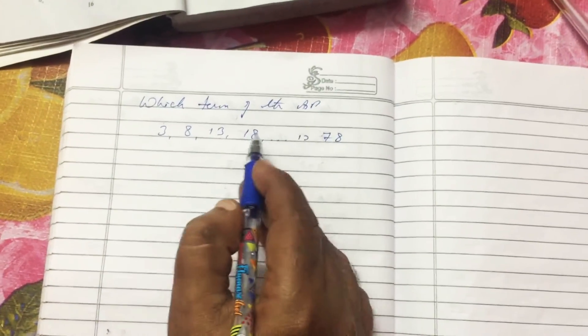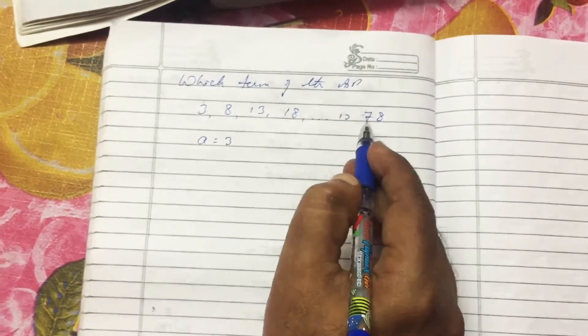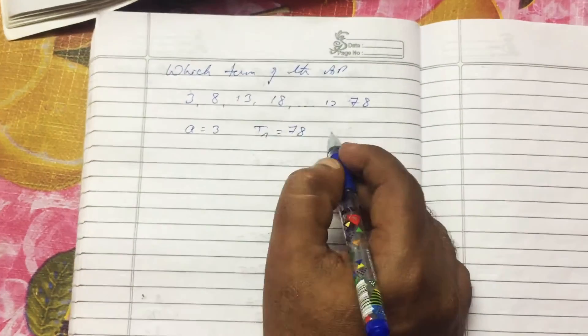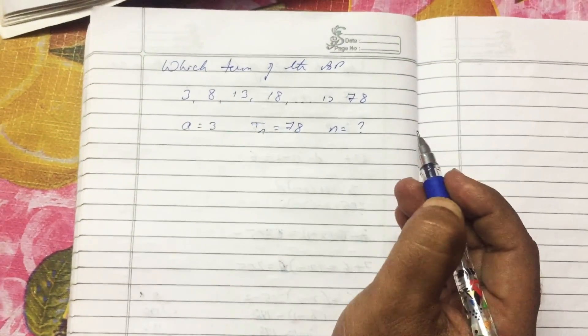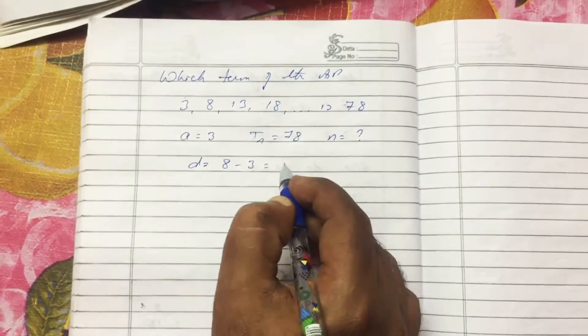When you look at the AP here, this is the first term A equals 3. Then the last term is given, that is TN equals 78, which term means N equals question mark. And D is T2 minus T1, 8 minus 3, that is 5.